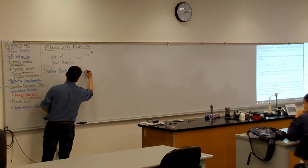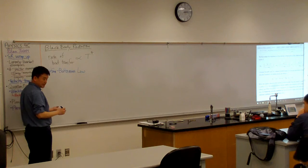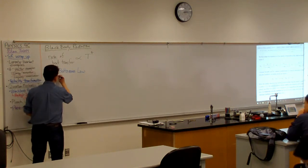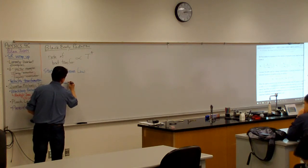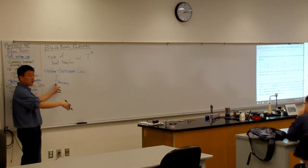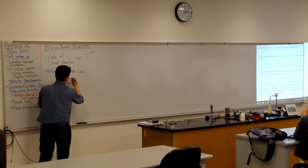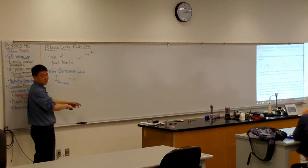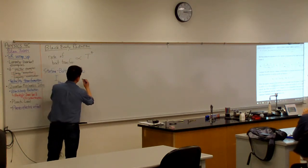Which says that intensity of blackbody radiation, so intensity of blackbody, and you remember how intensity was defined, power per area, is given by sigma. This is the Stefan Boltzmann constant. Just look it up. Sigma times T to the fourth power.